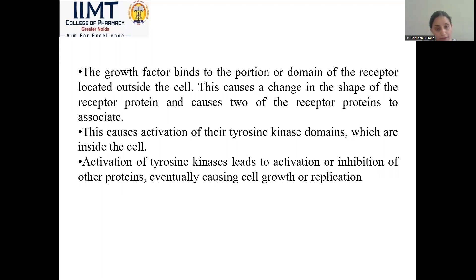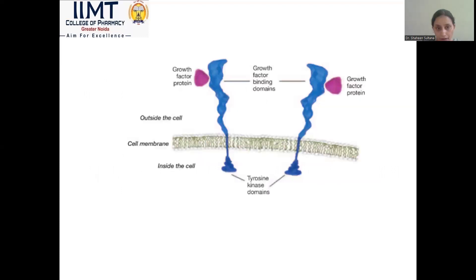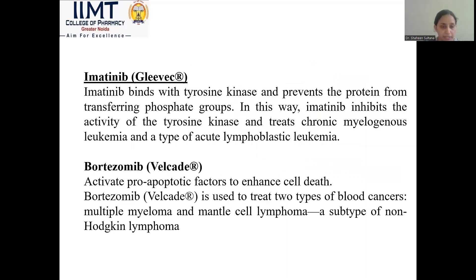The growth factor binds to the portion or domain of a receptor located outside the cell. This causes a change in the shape of the receptor and causes two receptor proteins to associate, leading to activation of the tyrosine kinase domain inside the cell. Activation of tyrosine kinase leads to the activation or inhibition of other proteins, eventually causing cell growth. Imatinib inhibits the activity of tyrosine kinase and is used to treat chronic myelogenous leukemia and a type of lymphoblastic leukemia.